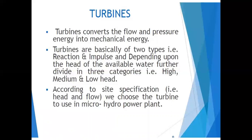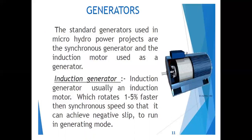The standard generators used in micro hydro power projects are the synchronous generator and the induction motor. These are all AC generators. The induction generator runs one to five percent faster than the synchronous speed so that it achieves negative slip to run in generating mode.